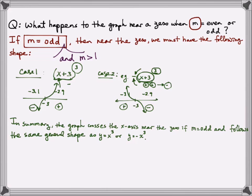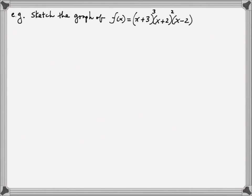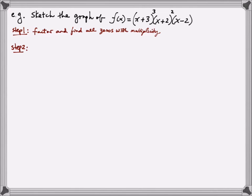In the special case when m = 1, the factor is just raised to the first power, and the graph near that zero looks exactly like a line — it still crosses the x-axis, but it's not as smooth and curvy near the zero as in the case of x cubed. Next, let's use what we've just learned to graph the polynomial we've been using from the beginning. Step 1 is to factor and find all zeros. Since it's already in factored form, we simply write down the zeros with their respective multiplicities.